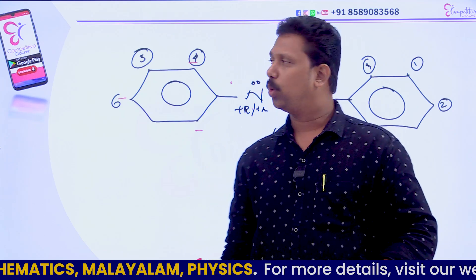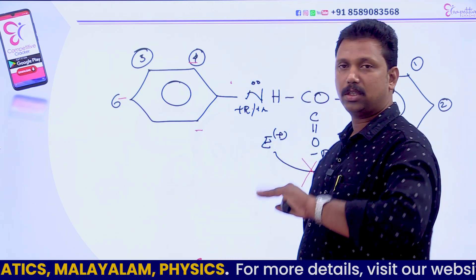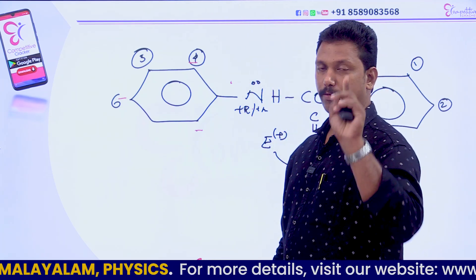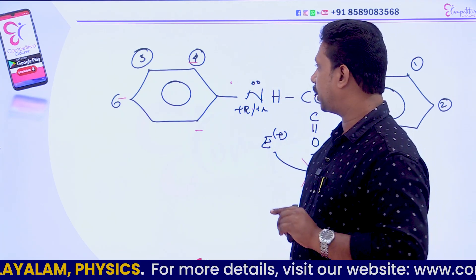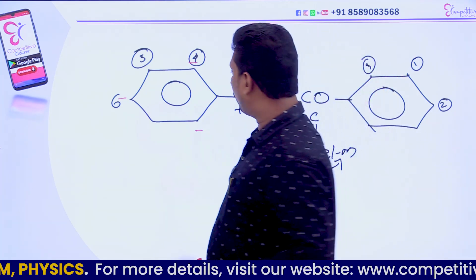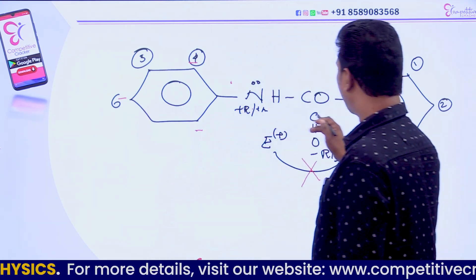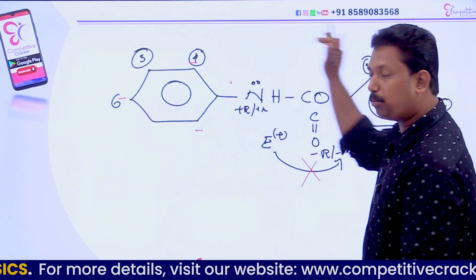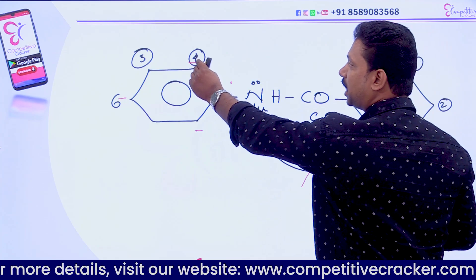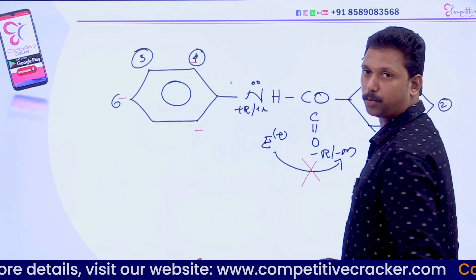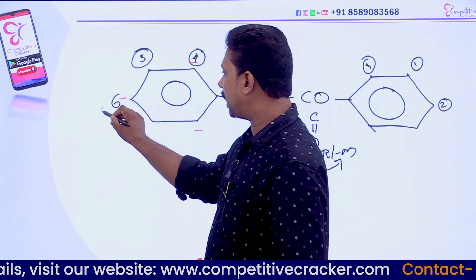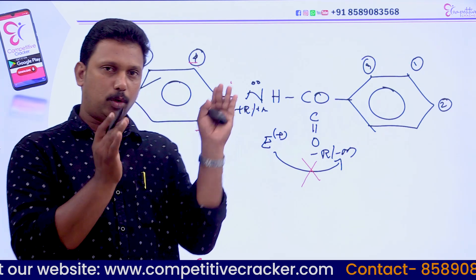Positions four and six have equal chances. However, this amide group is a bulky group, which creates a steric effect on the fourth position. So surely the answer is position six — the para position of the NH-bearing ring.